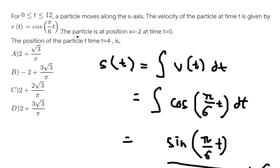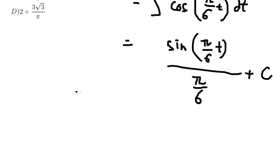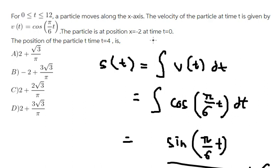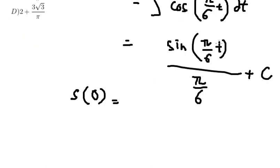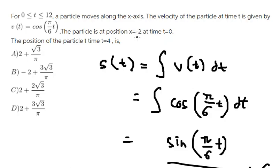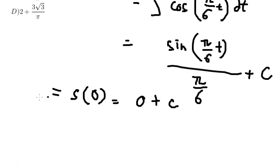So we know that the particle is at position S equals negative 2 at time t equals 0. So we put t equal to 0 in here. And if we put 0, you got 0. And we know that S(0), that is negative 2. So that means C equals negative 2.